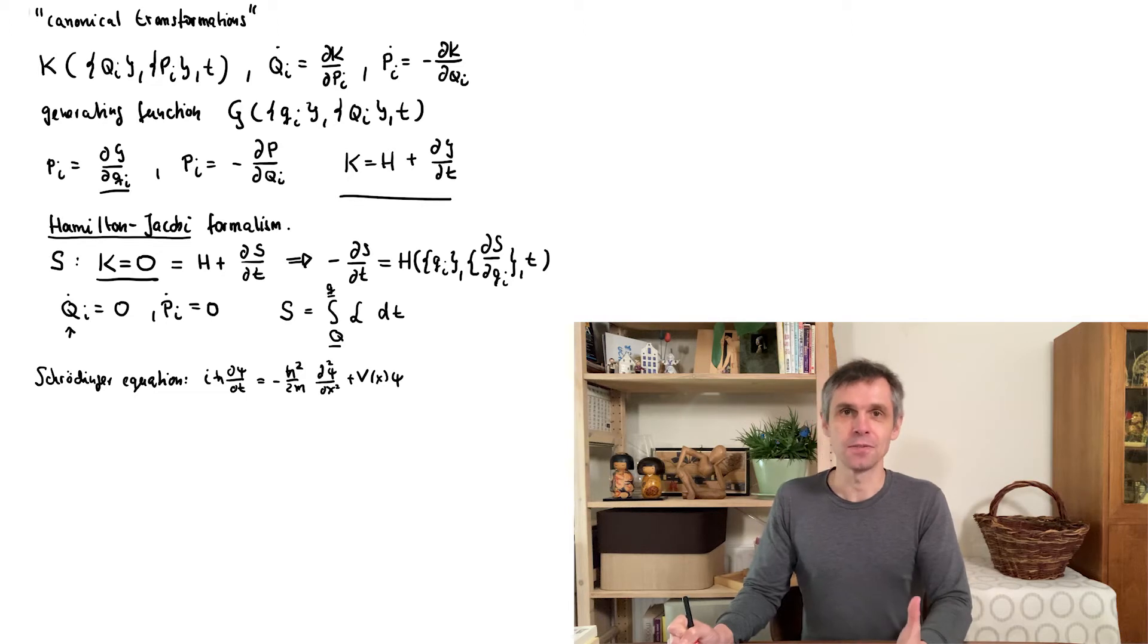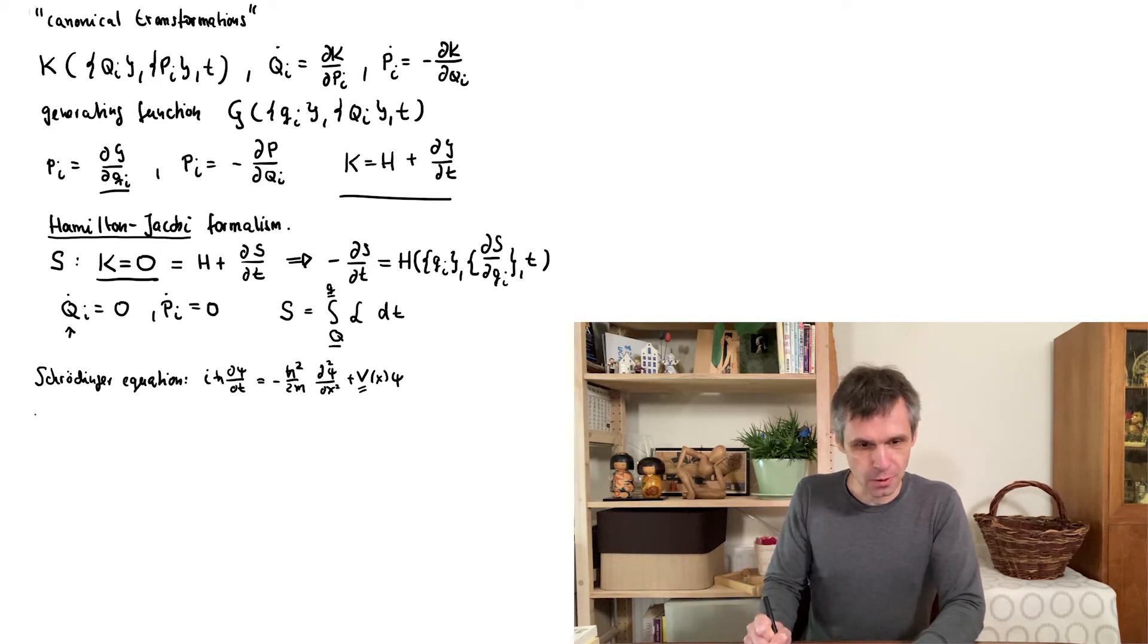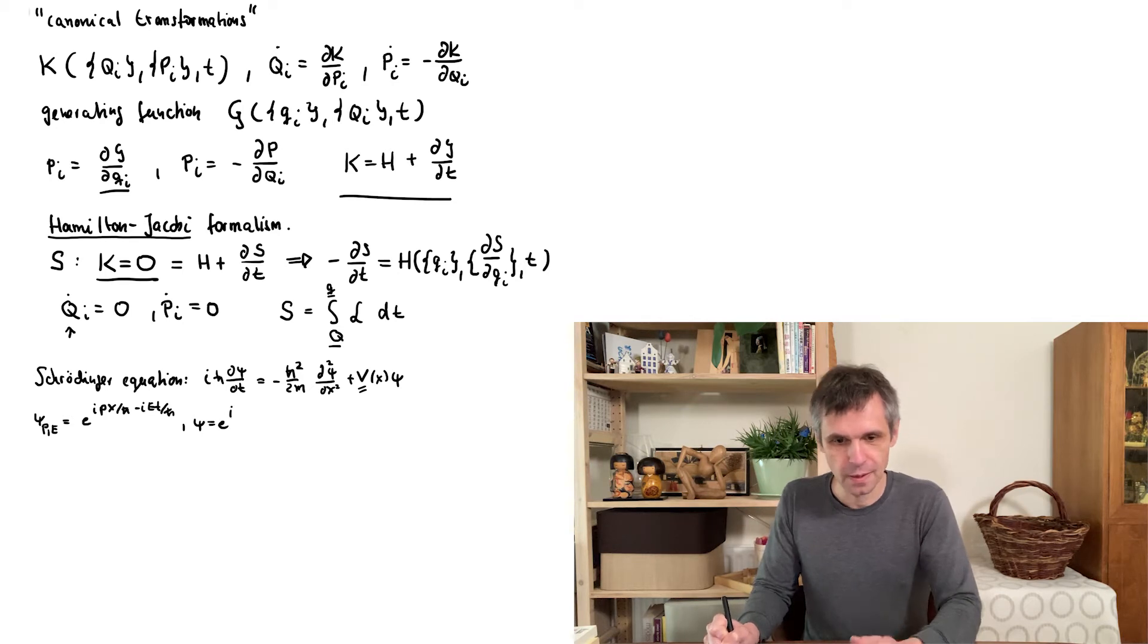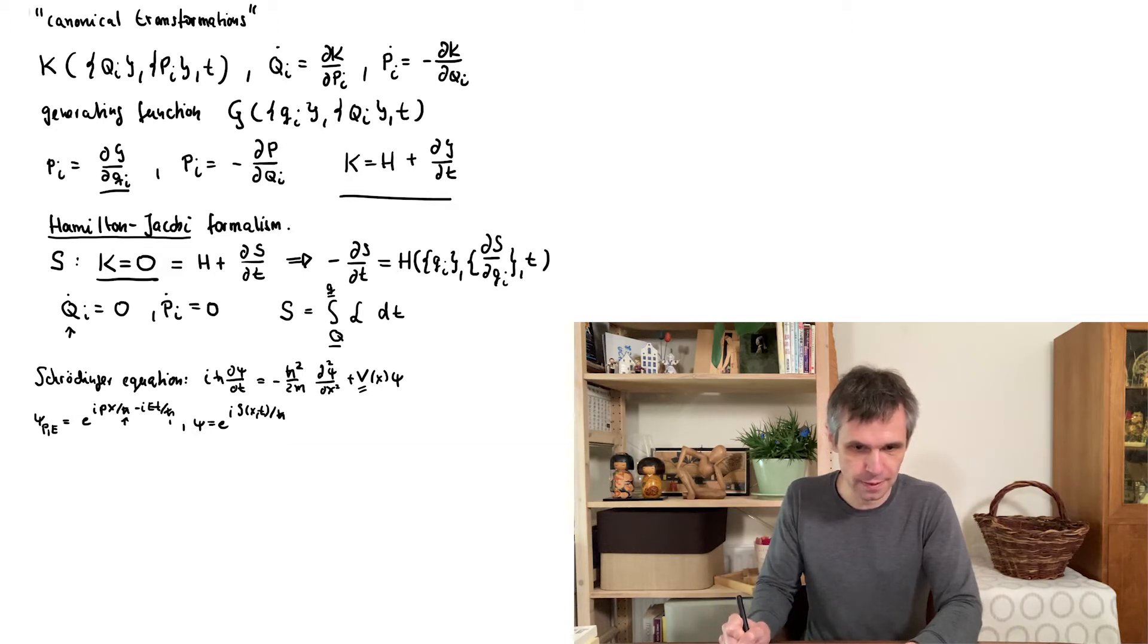And now let us try to find solutions which look similar to a plane wave even though our particle classically would experience some forces. Now recall that for a plane wave with fixed momentum and energy according to the rules of Planck and de Broglie we have the following expression. And let us try to find solutions which have a similar form but are more general in this case. So we have a function of position and time here and we scale out this factor h-bar which also appears here and here.